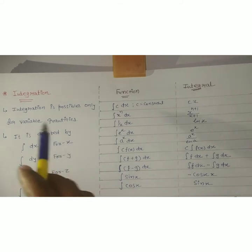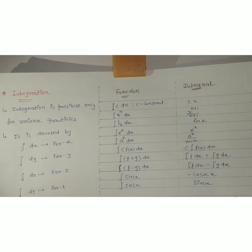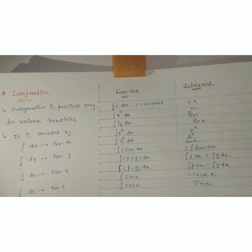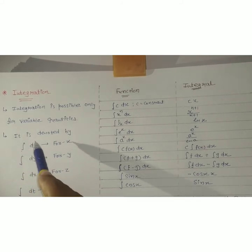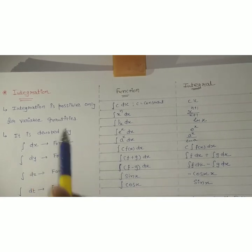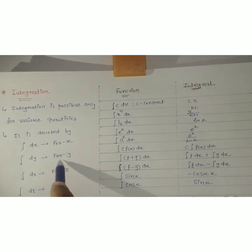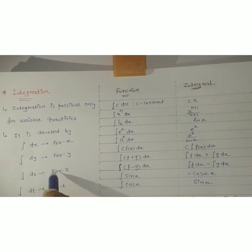Integration is possible only for variable quantities — we also told you this in differentiation. So the most common thing between differentiation and integration is that both can only be done for variable quantities. For differentiation we use d by dx notation; for integration, we write the integral sign followed by the function and then dx — that is integration for variable x. Similarly, dy for y, dz for z, dt for t.